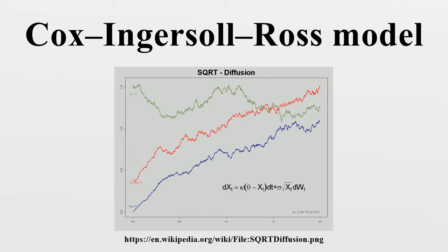Time-varying functions replacing coefficients can be introduced in the model in order to make it consistent with a pre-assigned term structure of interest rates and possibly volatilities. The most general approach is in McSudi, and a more tractable approach is in Briga and Mercurio, where an external time-dependent shift is added for consistency with an input term structure of rates. A significant extension of the CIR model to the case of stochastic mean and stochastic volatility is given by Lin Chen and is known as the Chen model. A CIR process is a special case of a basic affine jump diffusion, which still permits a closed-form expression for bond prices.